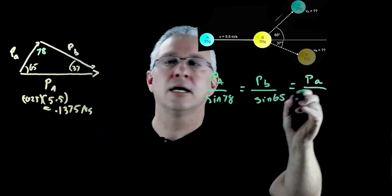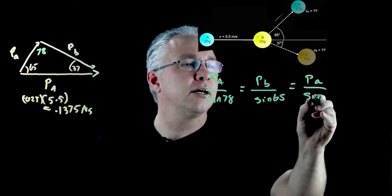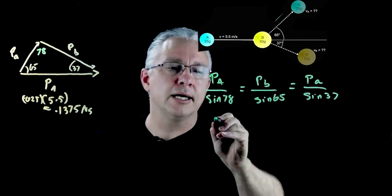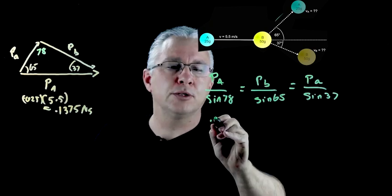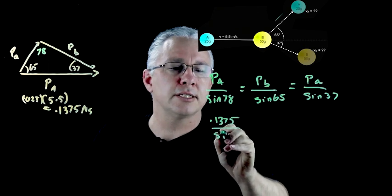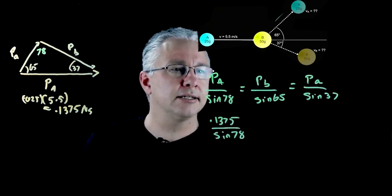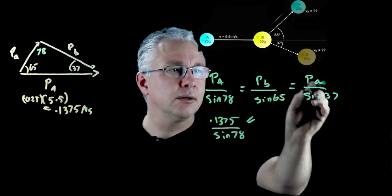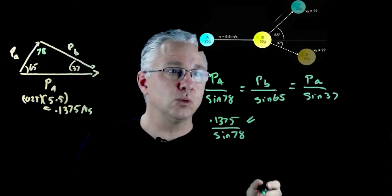But hold on, we know PA that is equal to 0.1375 over sin 78. Now can you see we can now actually work out each individual one.